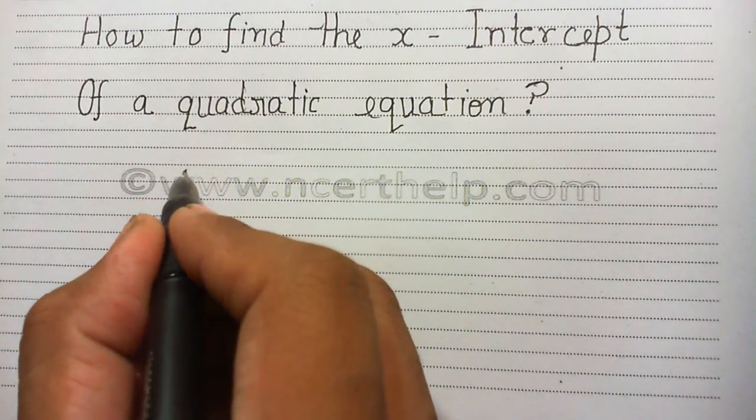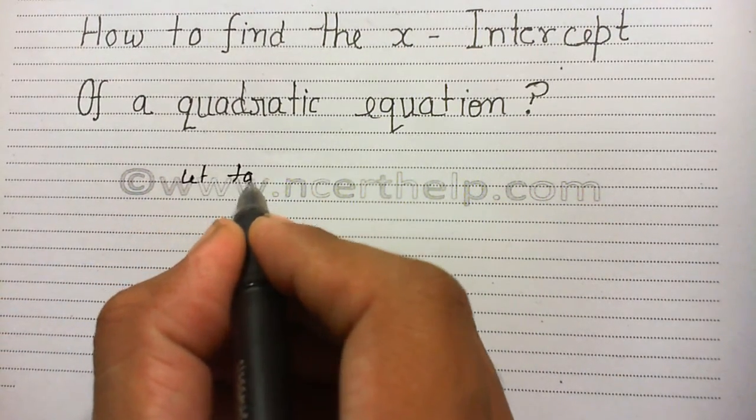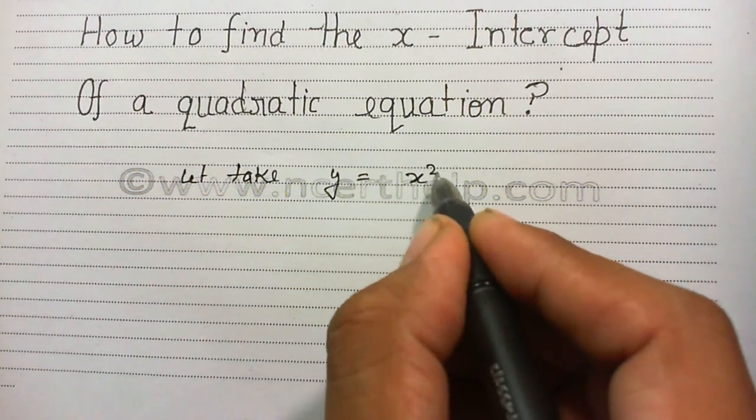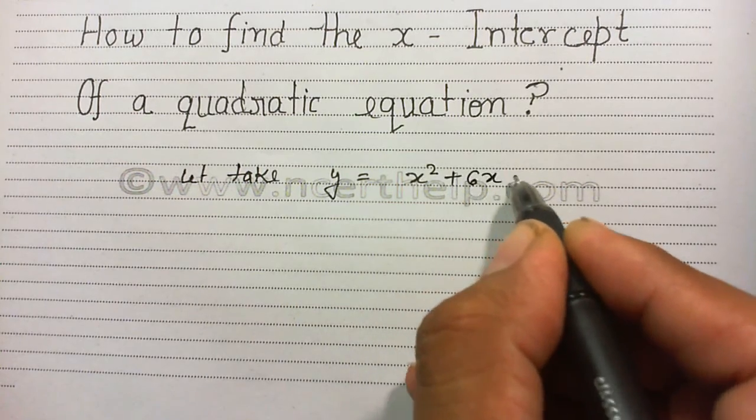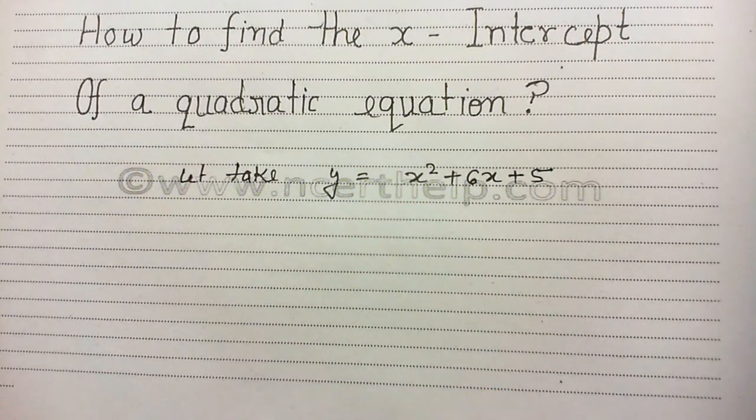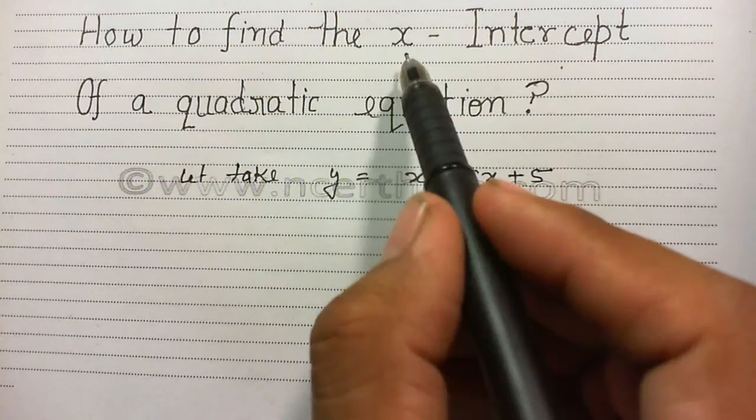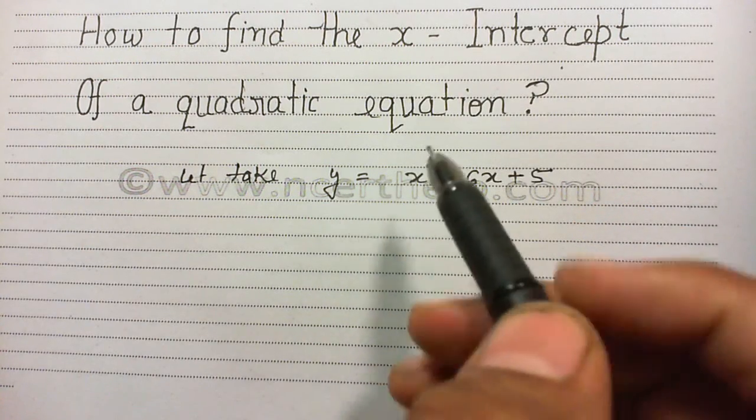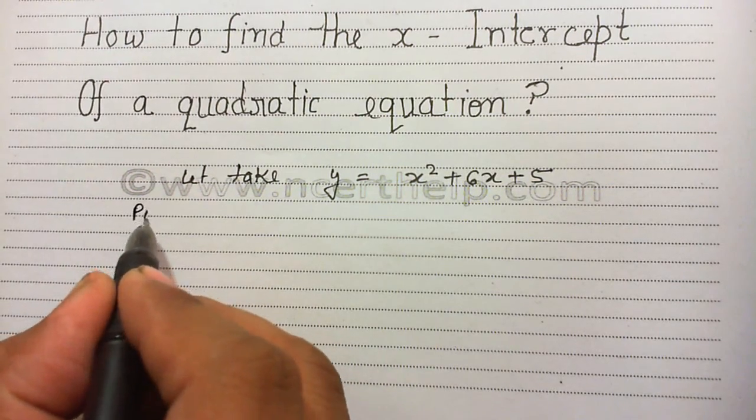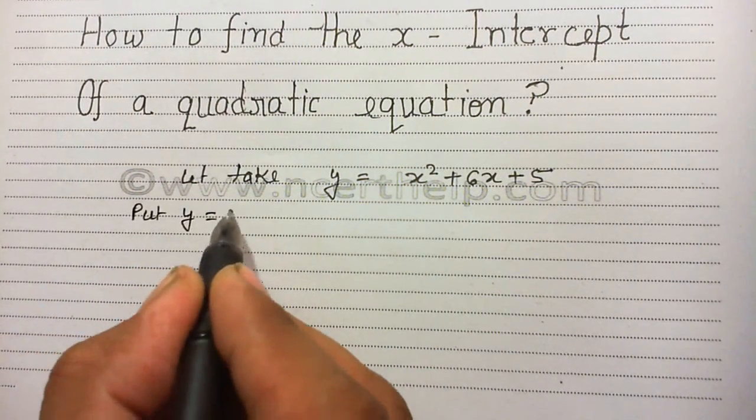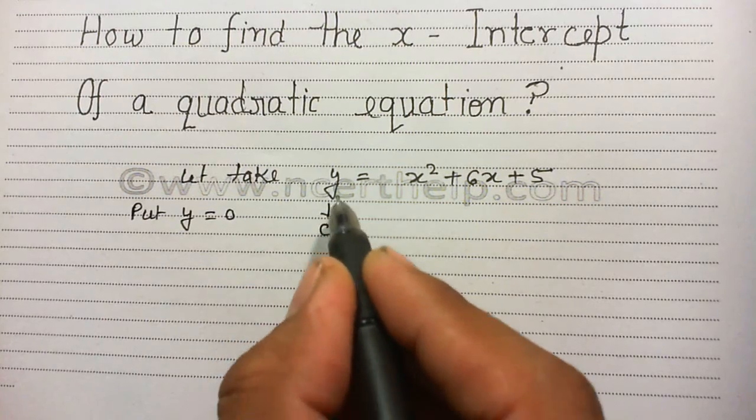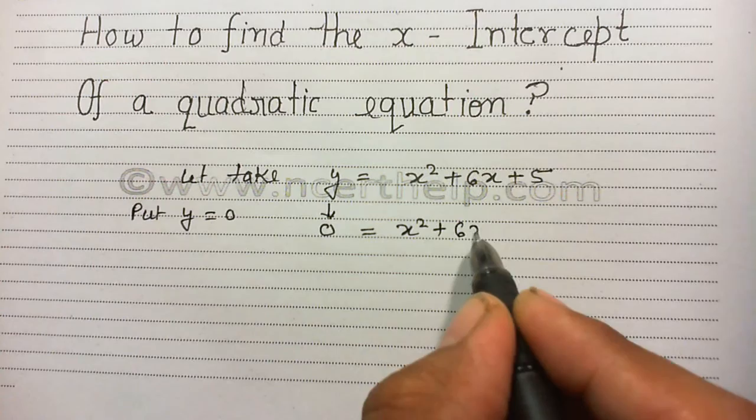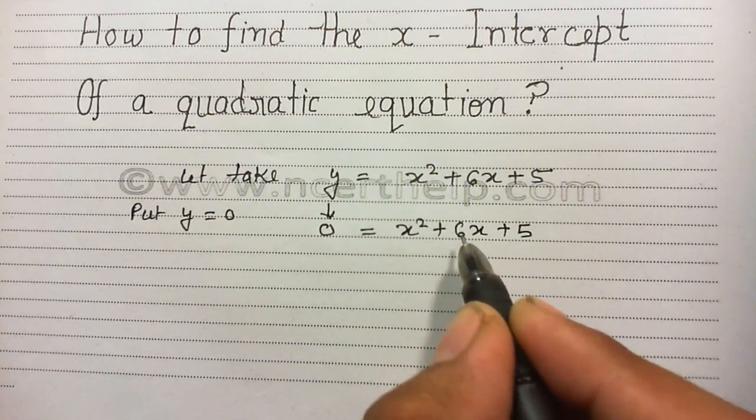Let's take y equals x square plus 6x plus 5. To get the x-intercept, we always put y equals 0. Put here 0 in place of y and now solve for the value of x.